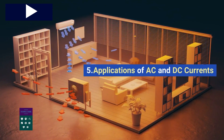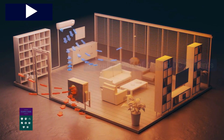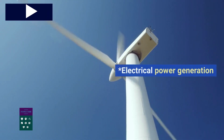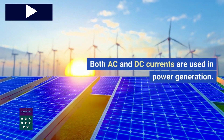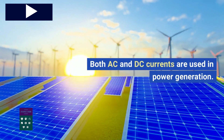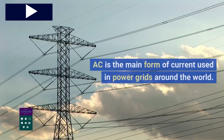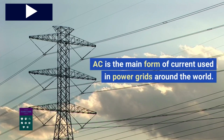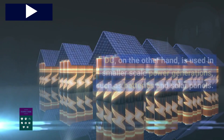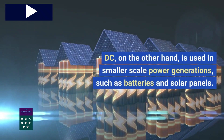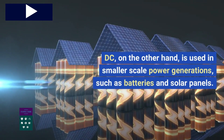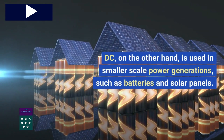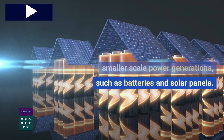Both AC and DC currents are used in power generation. AC is the main form of current used in power grids around the world. DC, on the other hand, is used in smaller-scale power generation, such as batteries and solar panels.